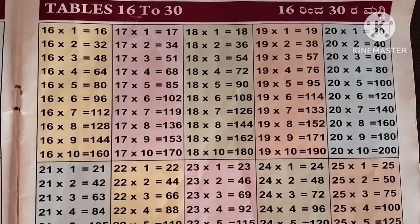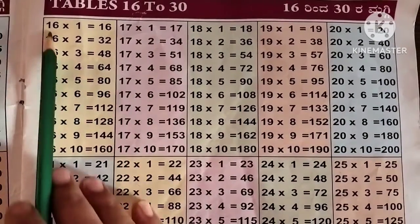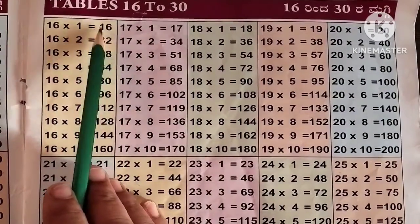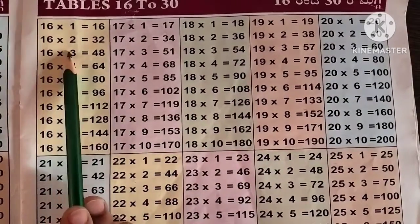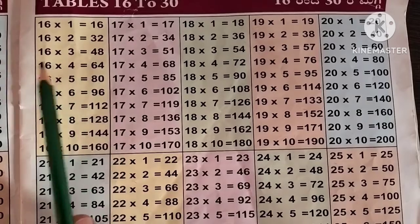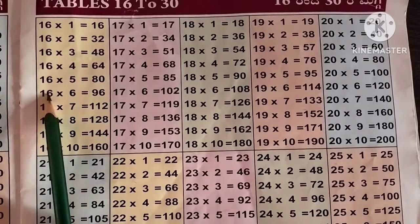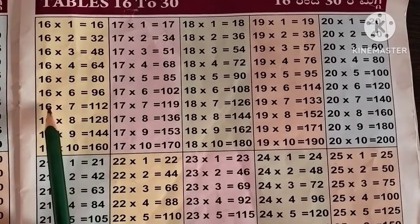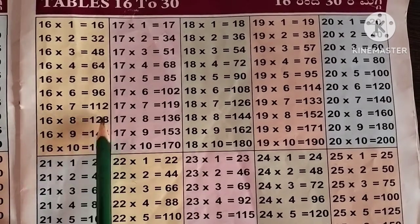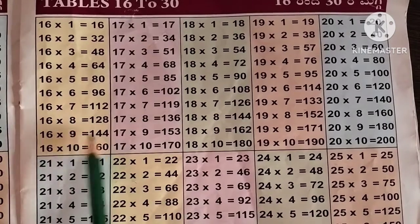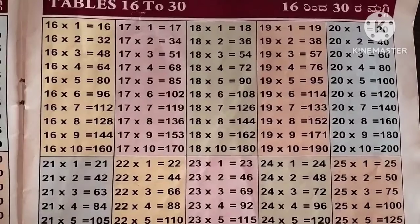Firstly, the table of 16: 16 ones are 16, 16 2s are 32, 16 3s are 48, 16 4s are 64, 16 5s are 80, 16 6s are 96, 16 7s are 112, 16 8s are 128, 16 9s are 144, 16 10s are 160.